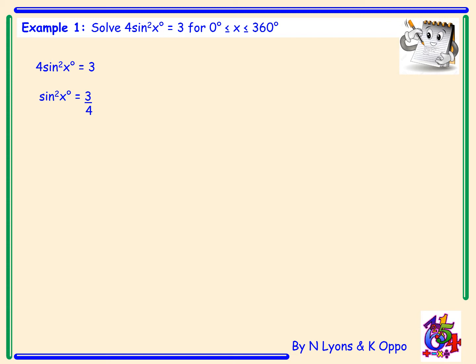We write this squared term between sine and x, but this is exactly the same as (sin x)². Therefore the opposite of squaring is to take the square root. To make sin x the subject we have to square root both sides, and if we square root any number, remember that you get a positive and a negative answer.